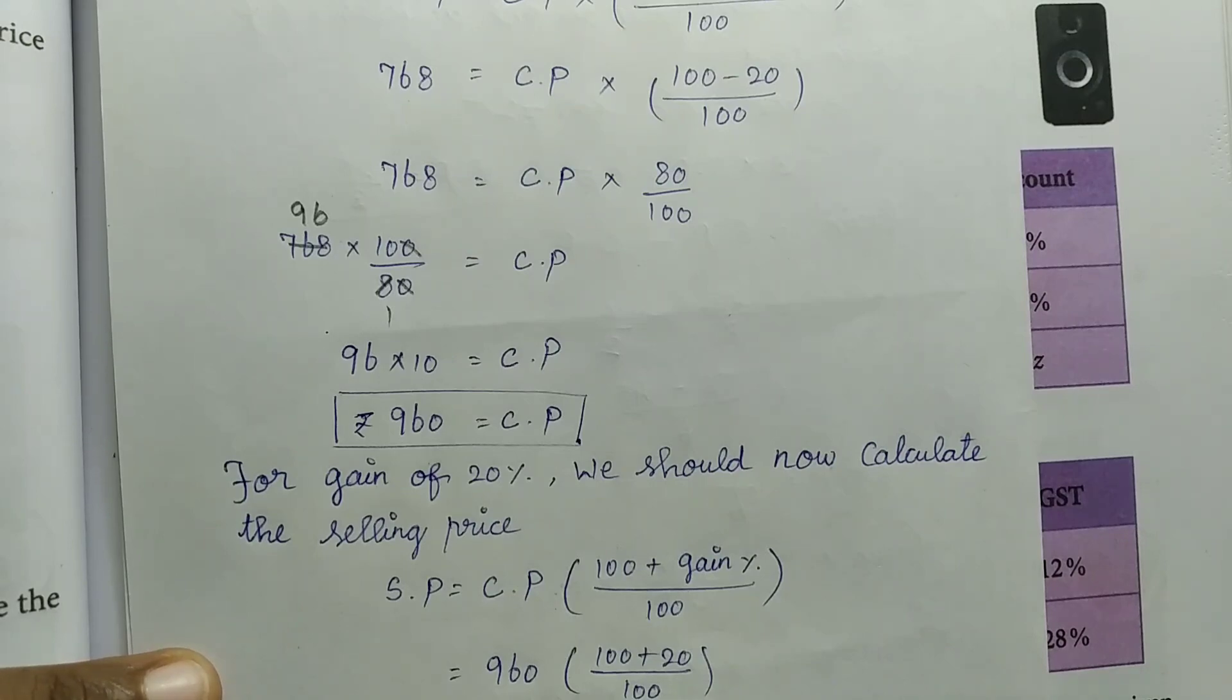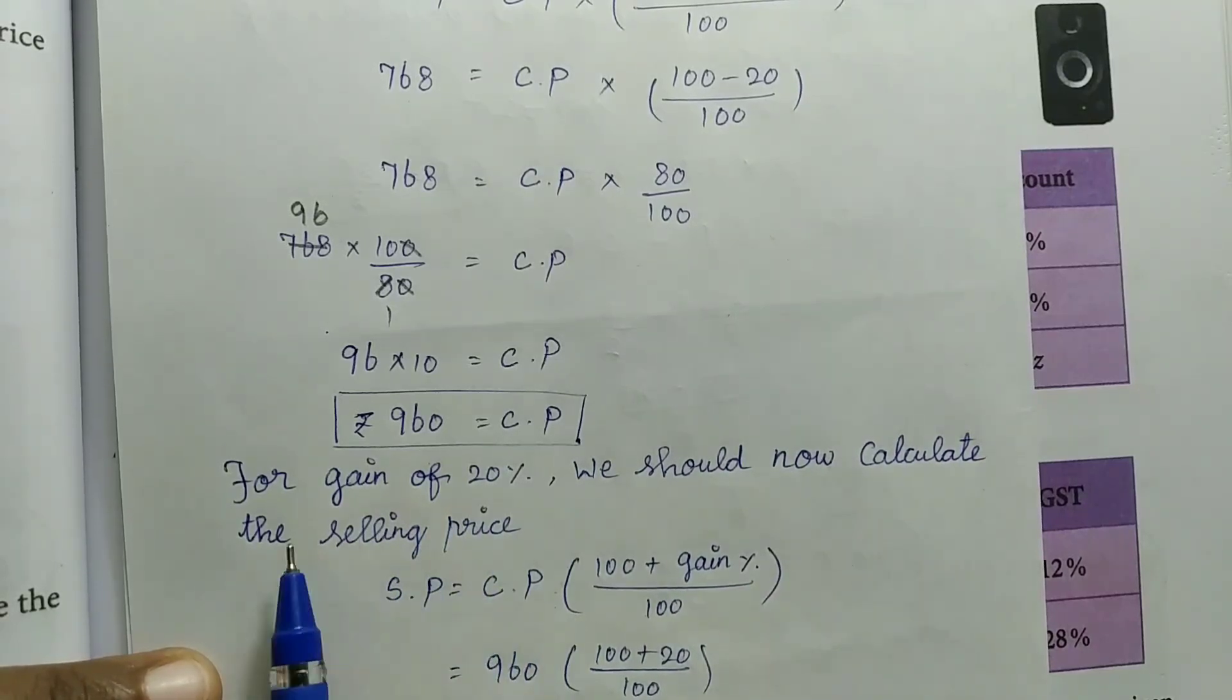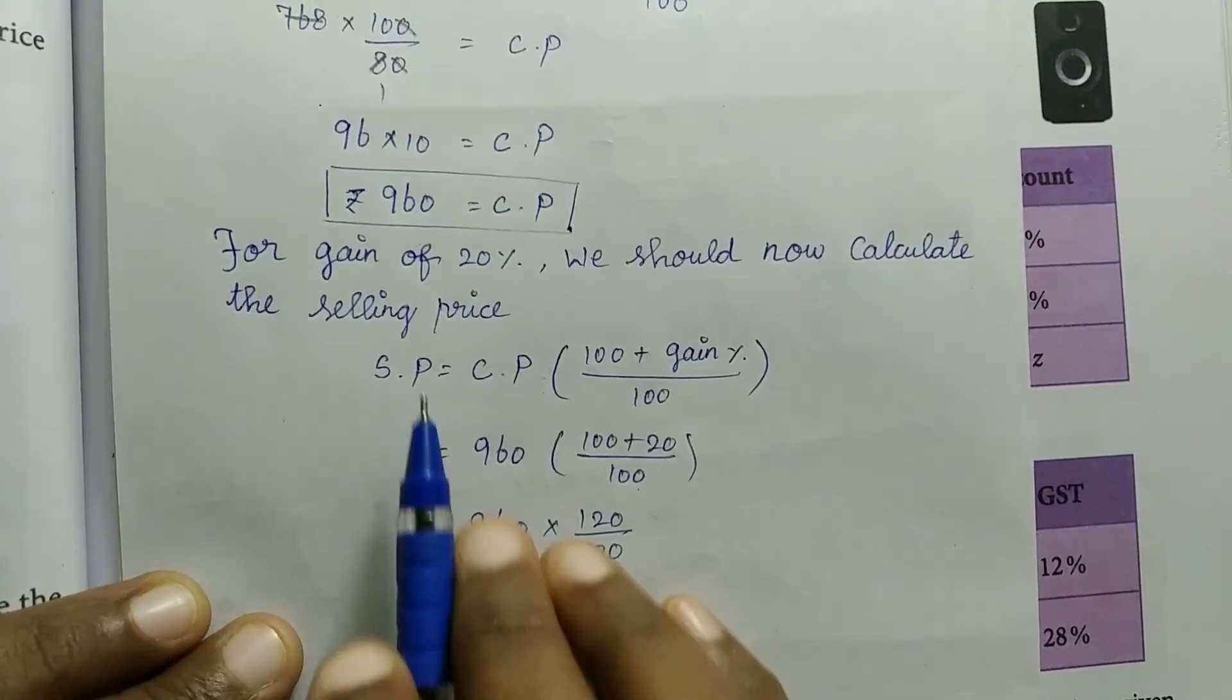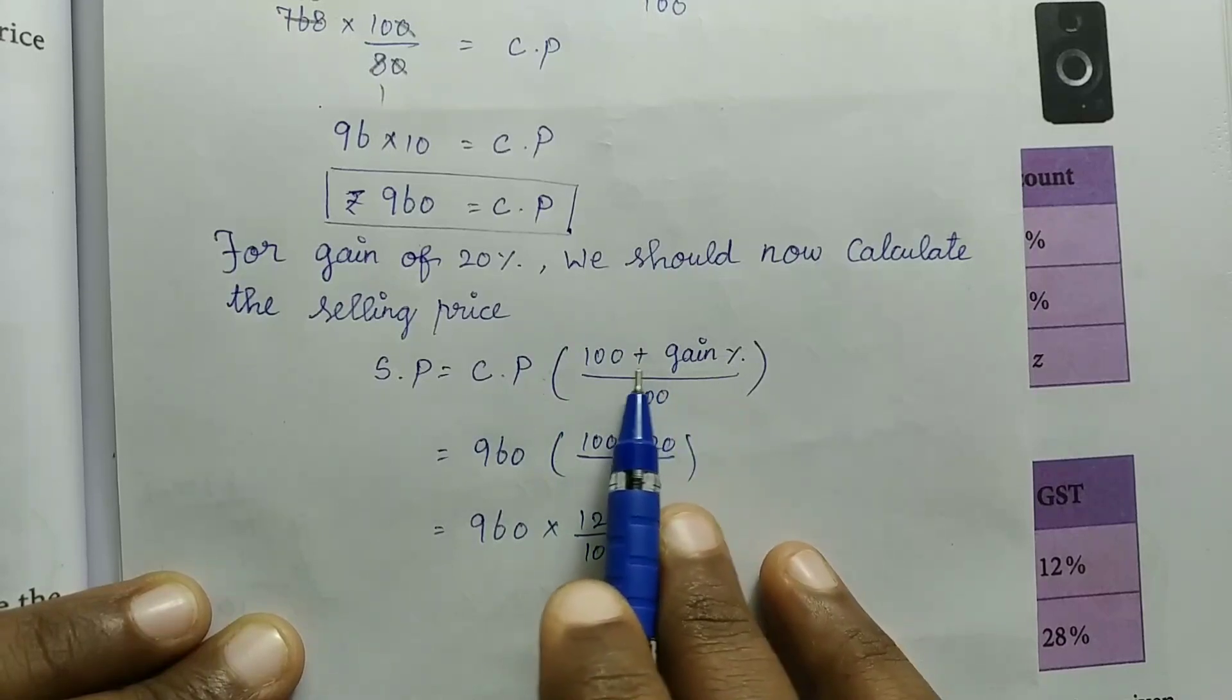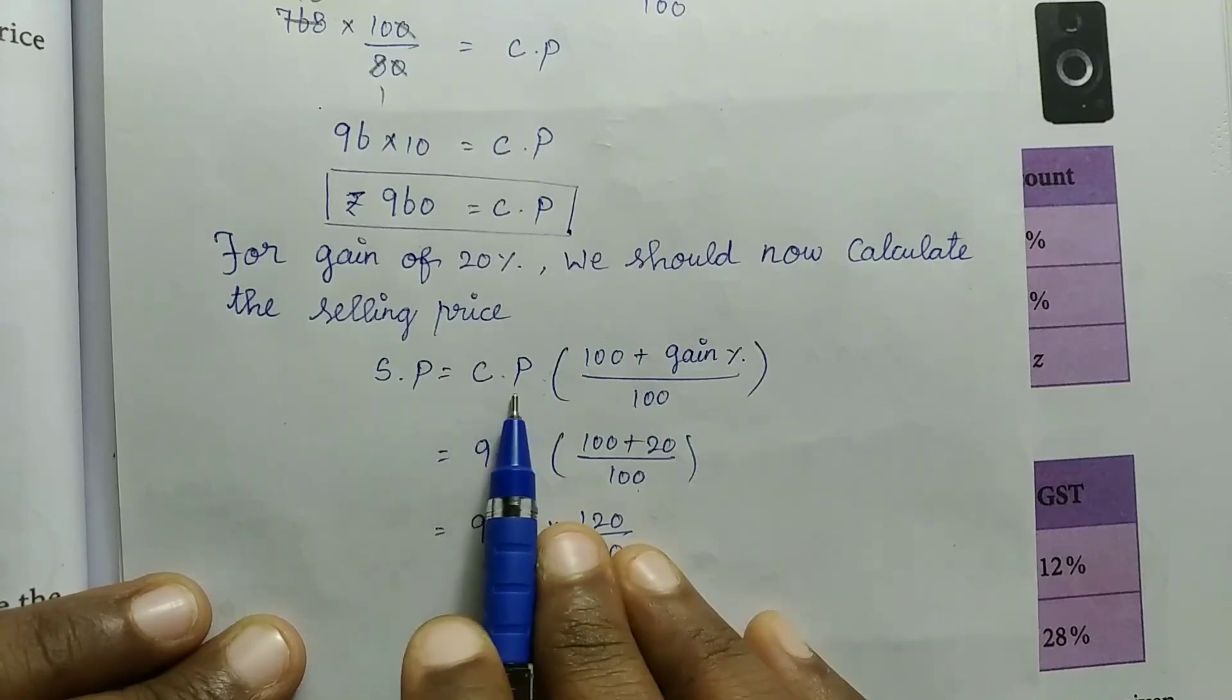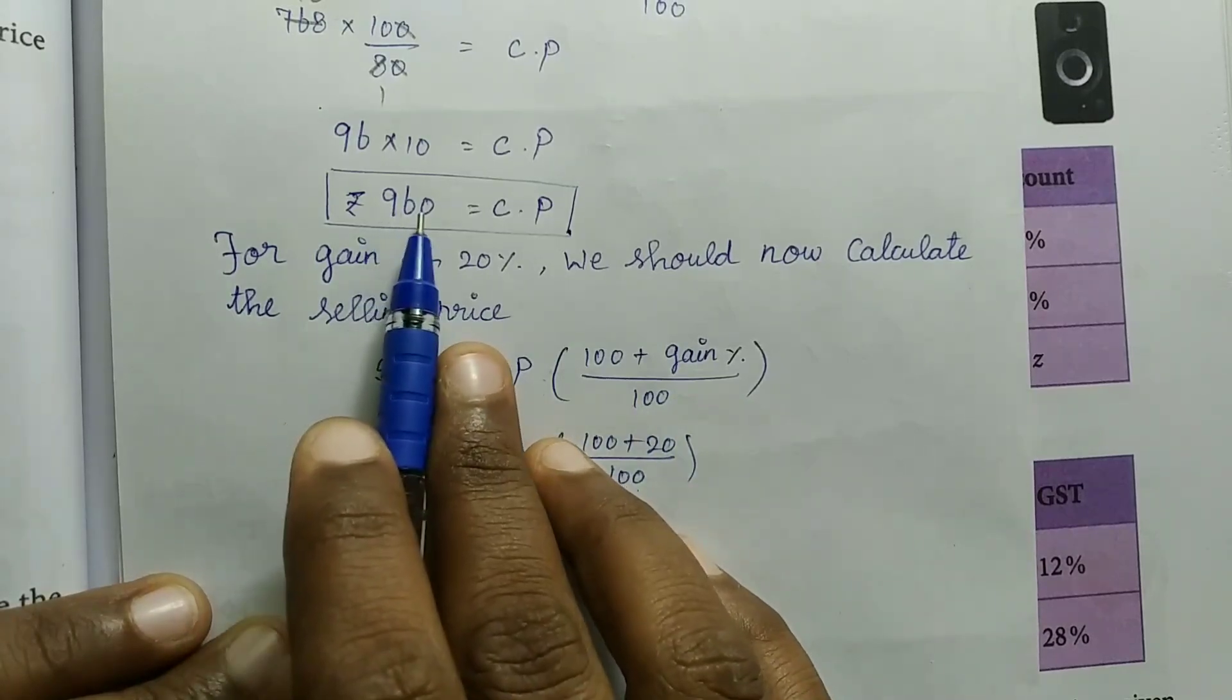Actually, the question asks for the selling price at 20% gain. Using the same procedure with gain percentage: SP = CP × (100 + Gain%) / 100. CP is 960.